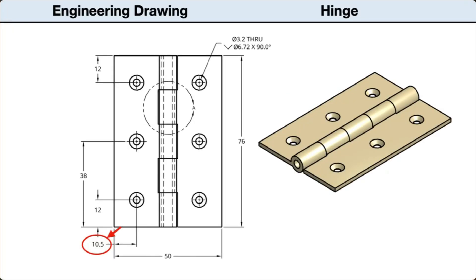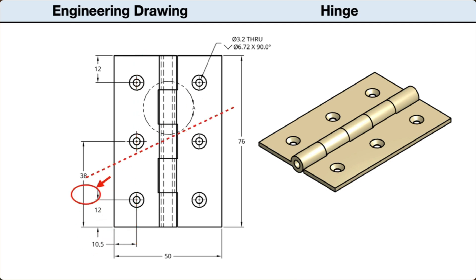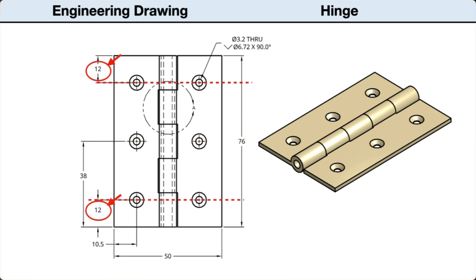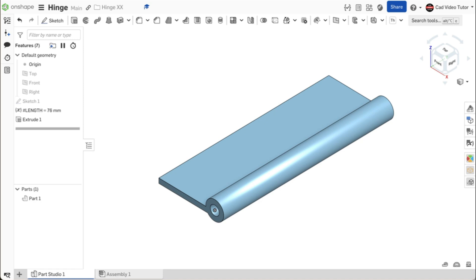Looking at the drawings again, let's examine the hole locations. All three holes are located 10.5 millimeters from the outside edge. The middle hole is centered on the leaf. The end holes are located 12 millimeters from the top and bottom edge. We will use a sketch point to place the hole locations.